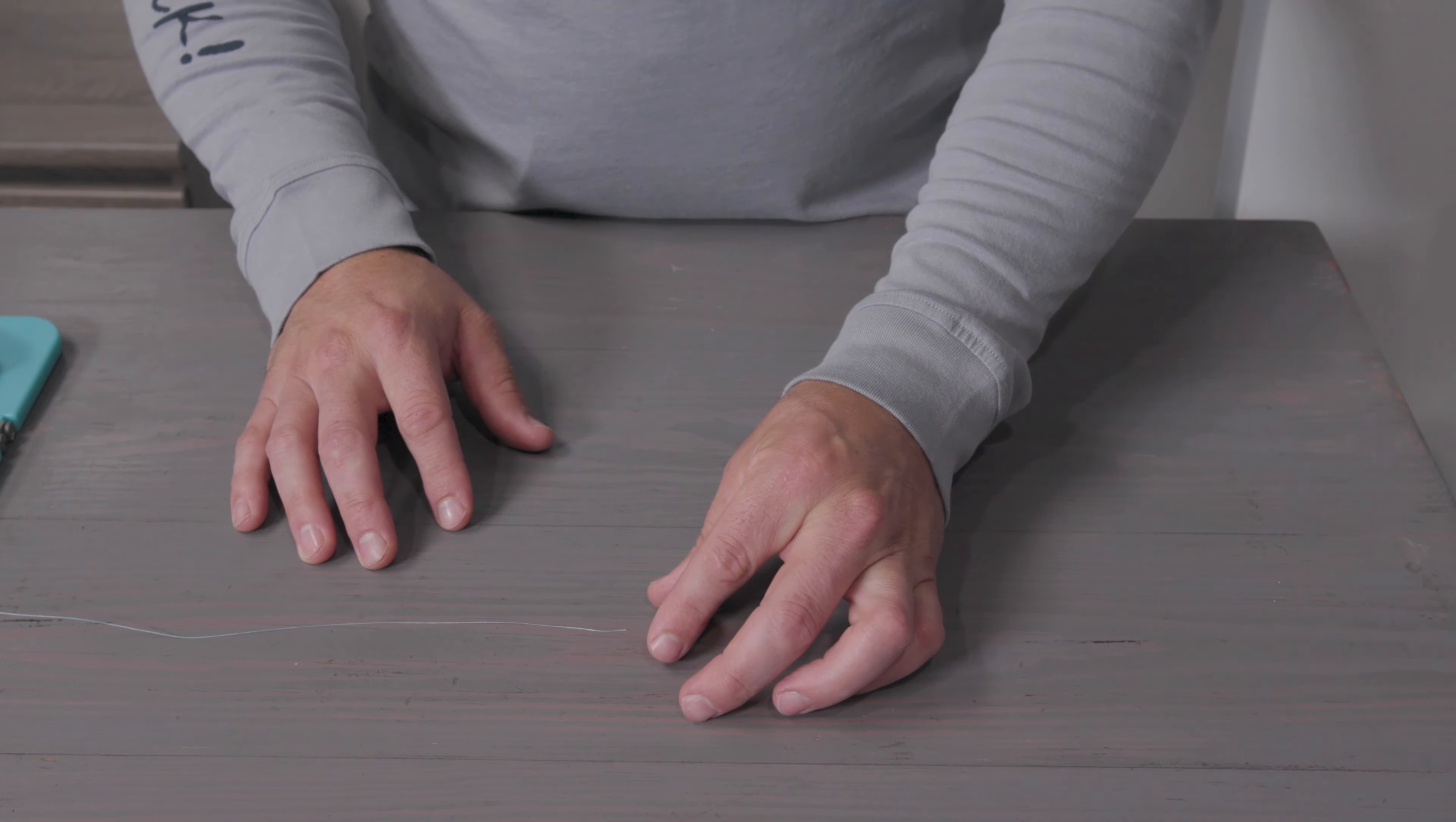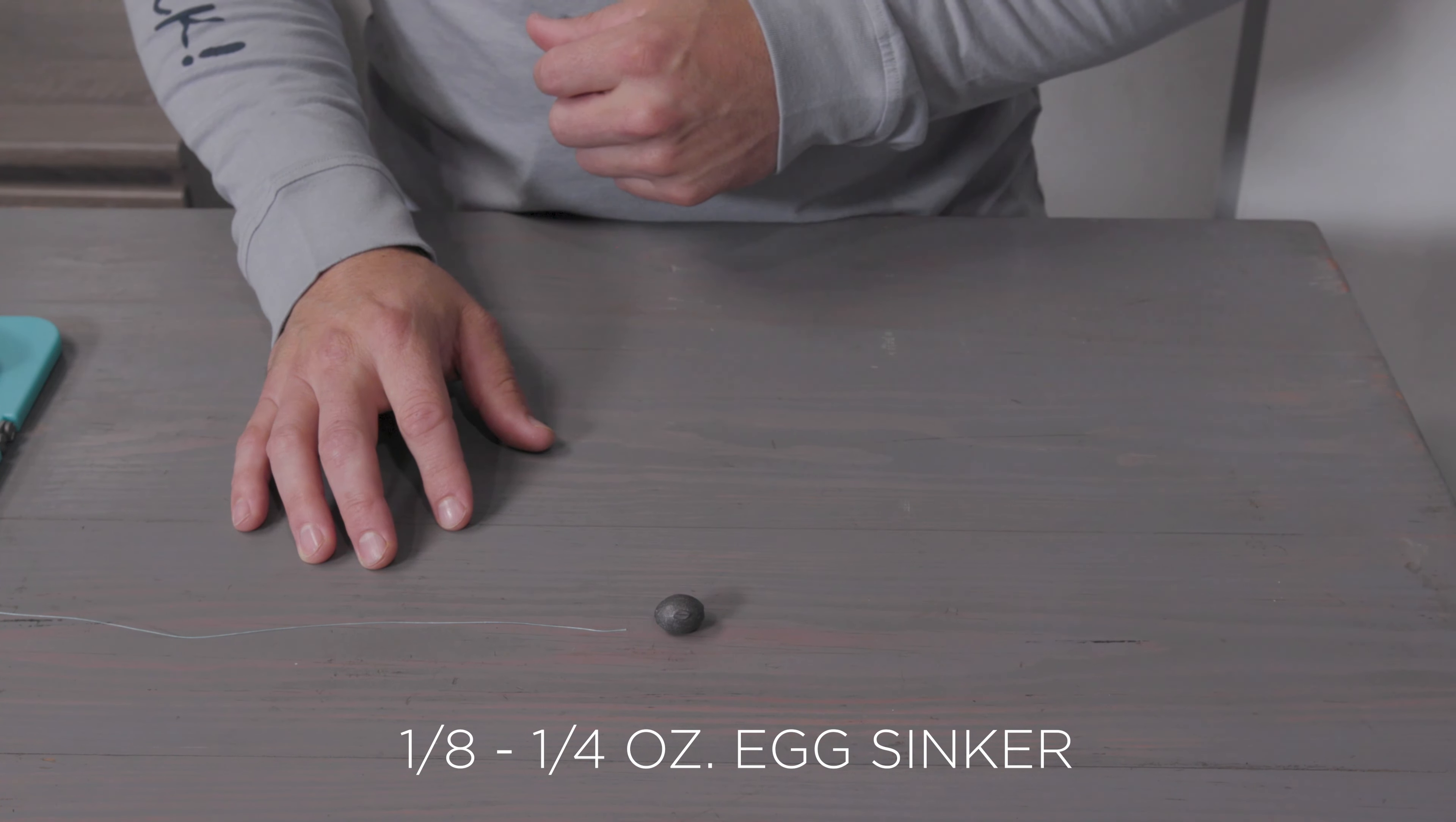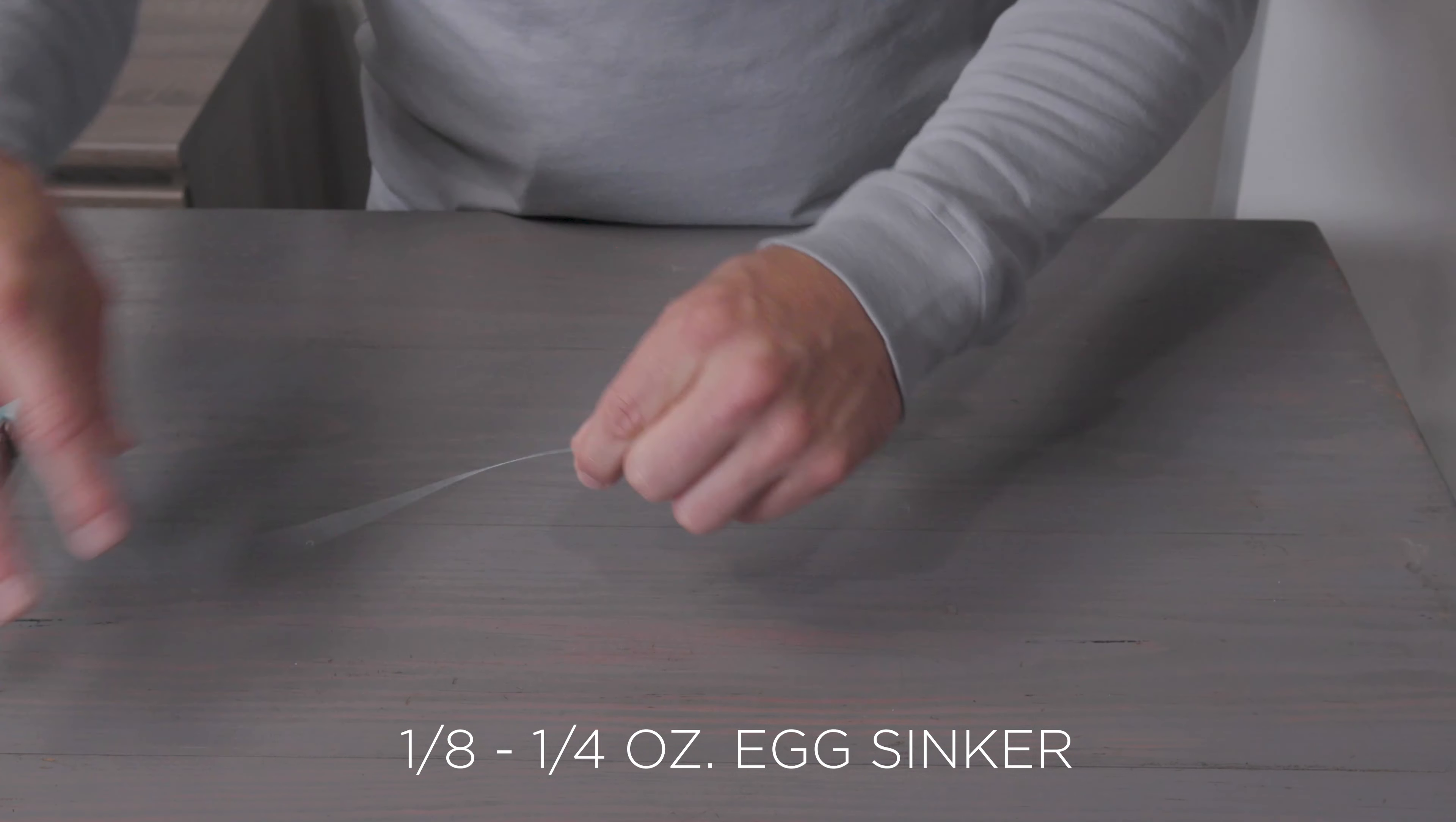Step number one: you want to take a one-eighth to a one-quarter ounce egg sinker and slide it onto your main line.